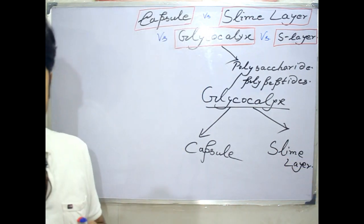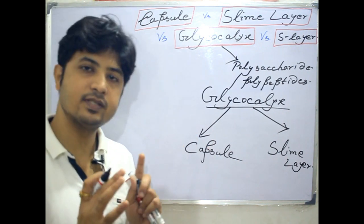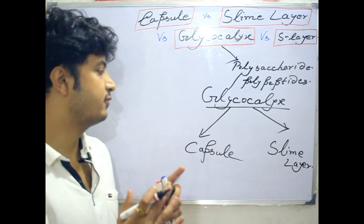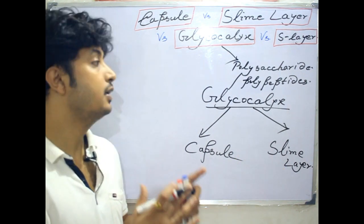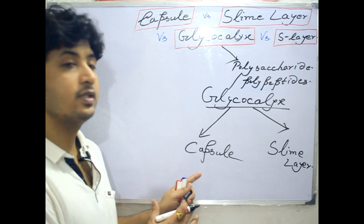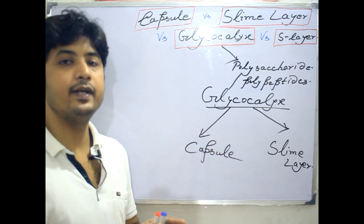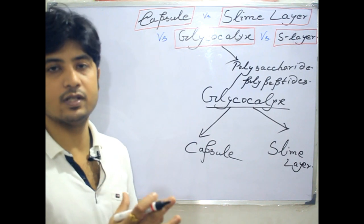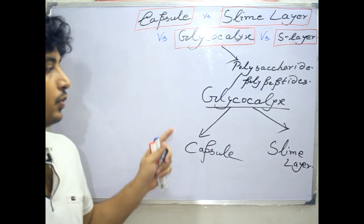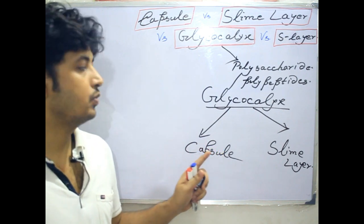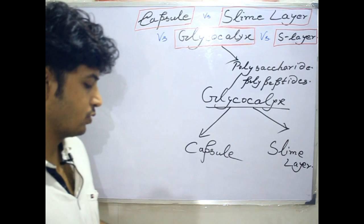The key concept is that glycocalyx itself is a layer which is divided further into capsule and slime layer depending upon the composition of the glycocalyx as well as the nature of its attachment to the bacterial cell. Now I'll go through capsule and slime layer one by one.